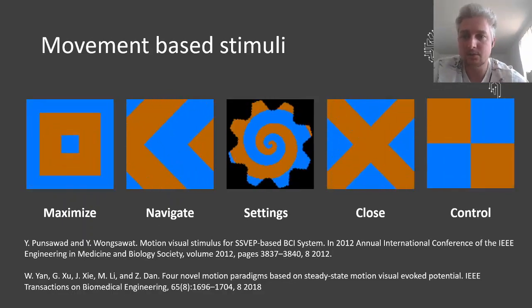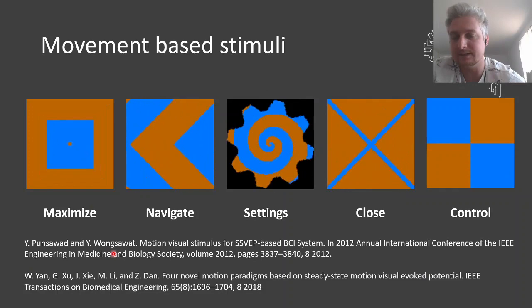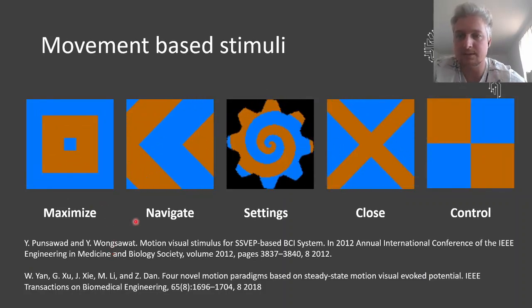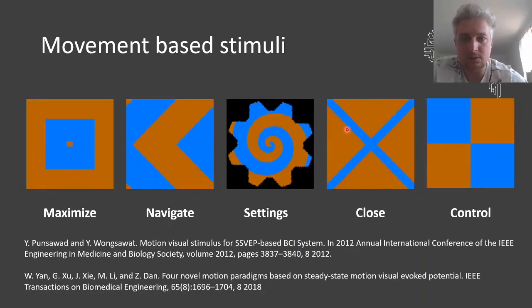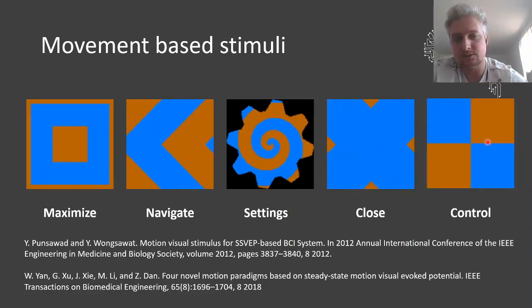So this is how the movement-based stimuli look like. As you can see, they try to mimic certain UI elements, like for example, maximizing or minimizing button, an arrow for navigation, settings wheel, close X for closing applications, and this is the control standard checkerboard stimulus. All of those stimuli are oriented on those two related works mentioned below.